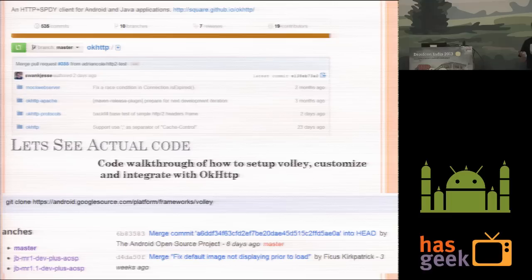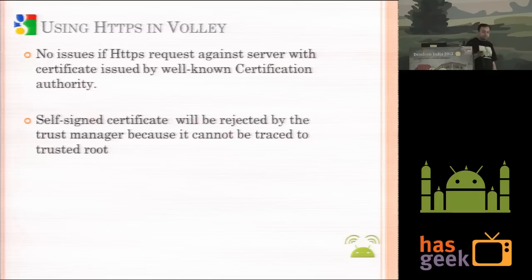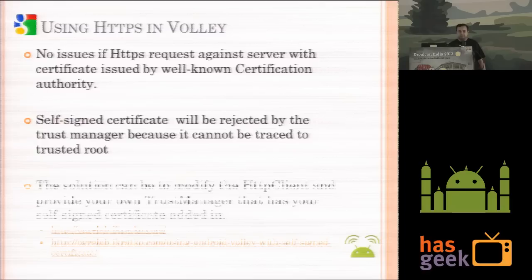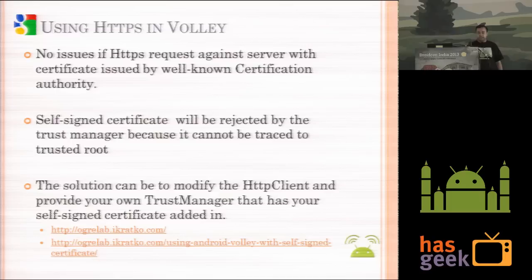When communicating over HTTPS, Volley has a trust manager involved. If the HTTPS certificate is from a trusted third-party Certificate Authority, it works gracefully. But if it's a localhost configuration with a self-signed certificate not signed by a trusted party, the certificate will be rejected. The solution is to modify the HTTP client and provide your own TrustManager — there is a good tutorial on how to do this.